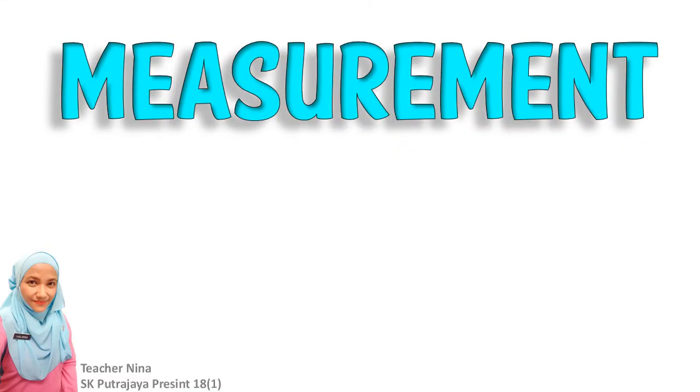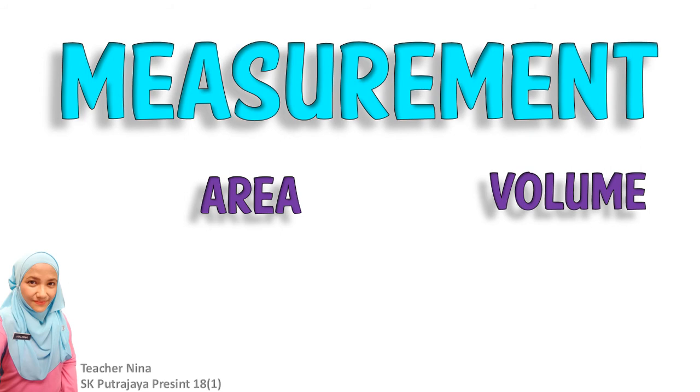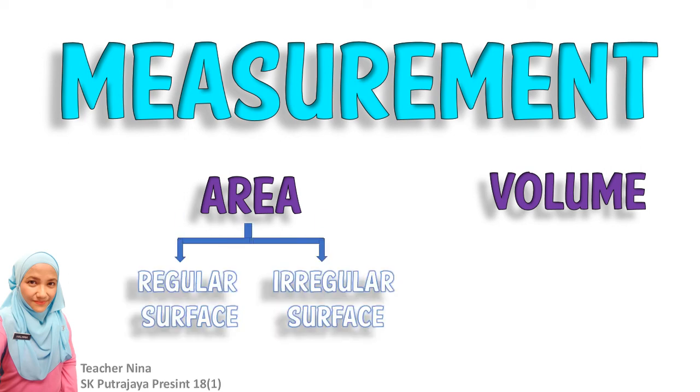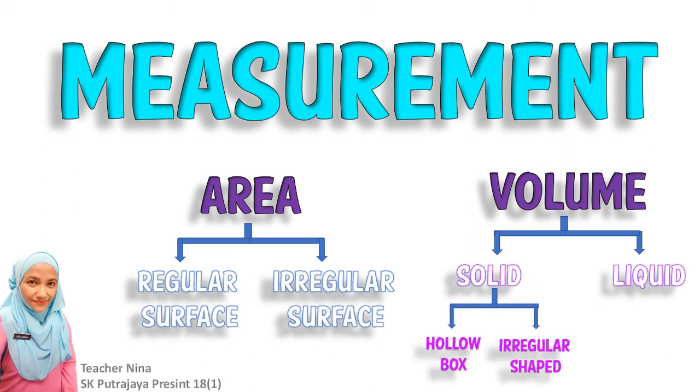Okay, just for a recap about this topic, measurement, you are going to learn two measurements, area and volume. For area, last week we have learned how to measure the area of a regular surface. And today, we are going to learn how to measure the area of an irregular surface. And then, you are going to learn about volume. Okay, let's start.